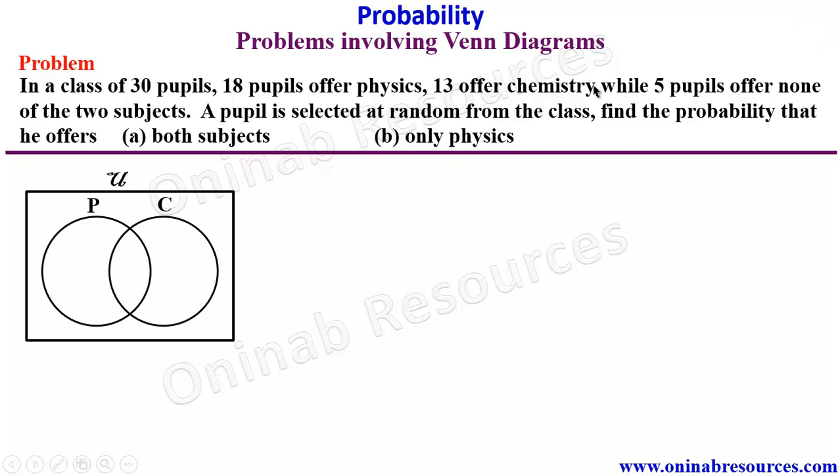So we're told that 5 pupils offer none of the two subjects. That is to say, they are going to be outside the two circles. So anywhere outside the two circles.